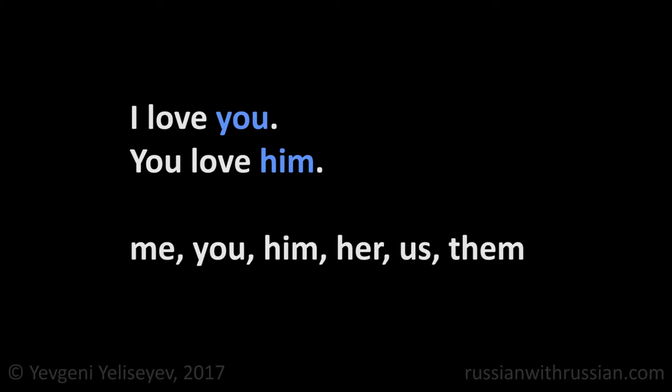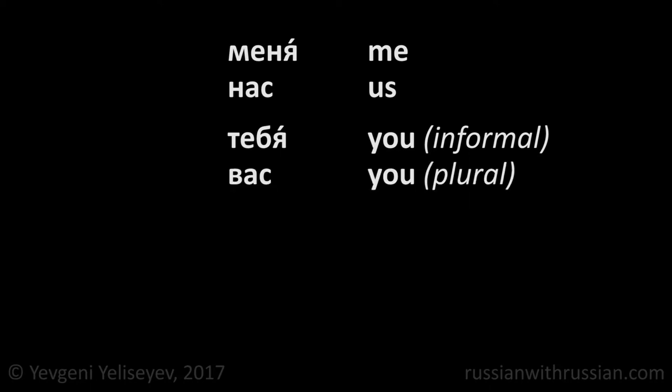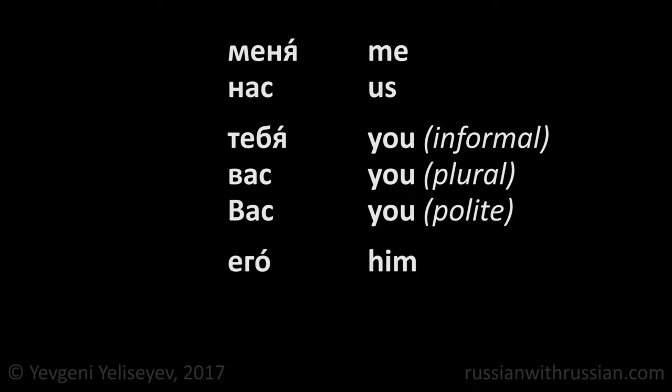To say 'I love you', 'you love him', and so on, we will need such forms as: me, you, him, her, us, them. We already examined them in the lesson about how to say what is your name, but I will remind them for you: меня — me; нас — us; тебя — informal you; вас — you, plural form; вас — you, polite form; его — him; её — her; их — them.